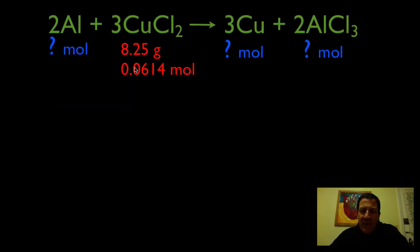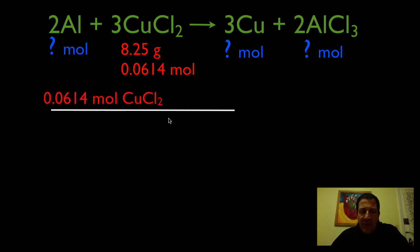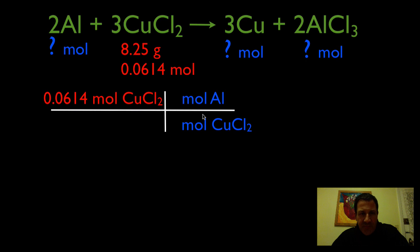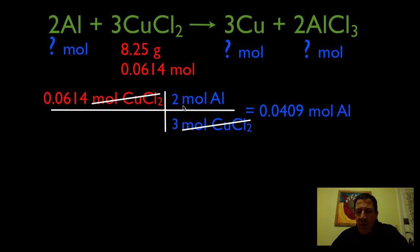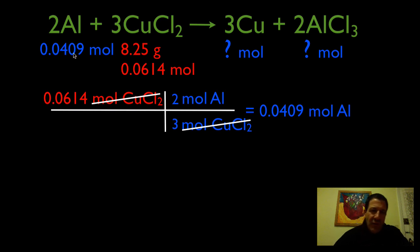Here's our mass and corresponding moles of copper chloride. We're going to use the molar ratio — this is step two in our three-step process. We want to get out of moles of CuCl₂, so that goes in the bottom. We want moles of aluminum in the top. It's a two-to-three ratio, so we put 2 in front of aluminum and 3 in front of copper chloride. The moles of copper chloride cancel, and that gives us 0.0409 moles of aluminum. So to react 8.25 grams of copper chloride, we would need 0.0409 moles of aluminum.